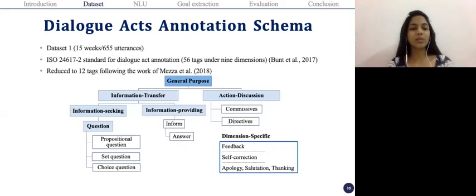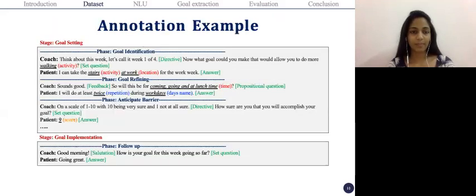For dialogue acts, we have 12 tags in total, which we reduced from the ISO standard dialogue annotation schema, which originally consisted of 56 tags. So we used the work of Mesar et al., and then based on the type of data we have, we reduced those 56 tags to these 12 tags. These 12 tags consist of the leaf nodes and some of the dimension-specific tags.